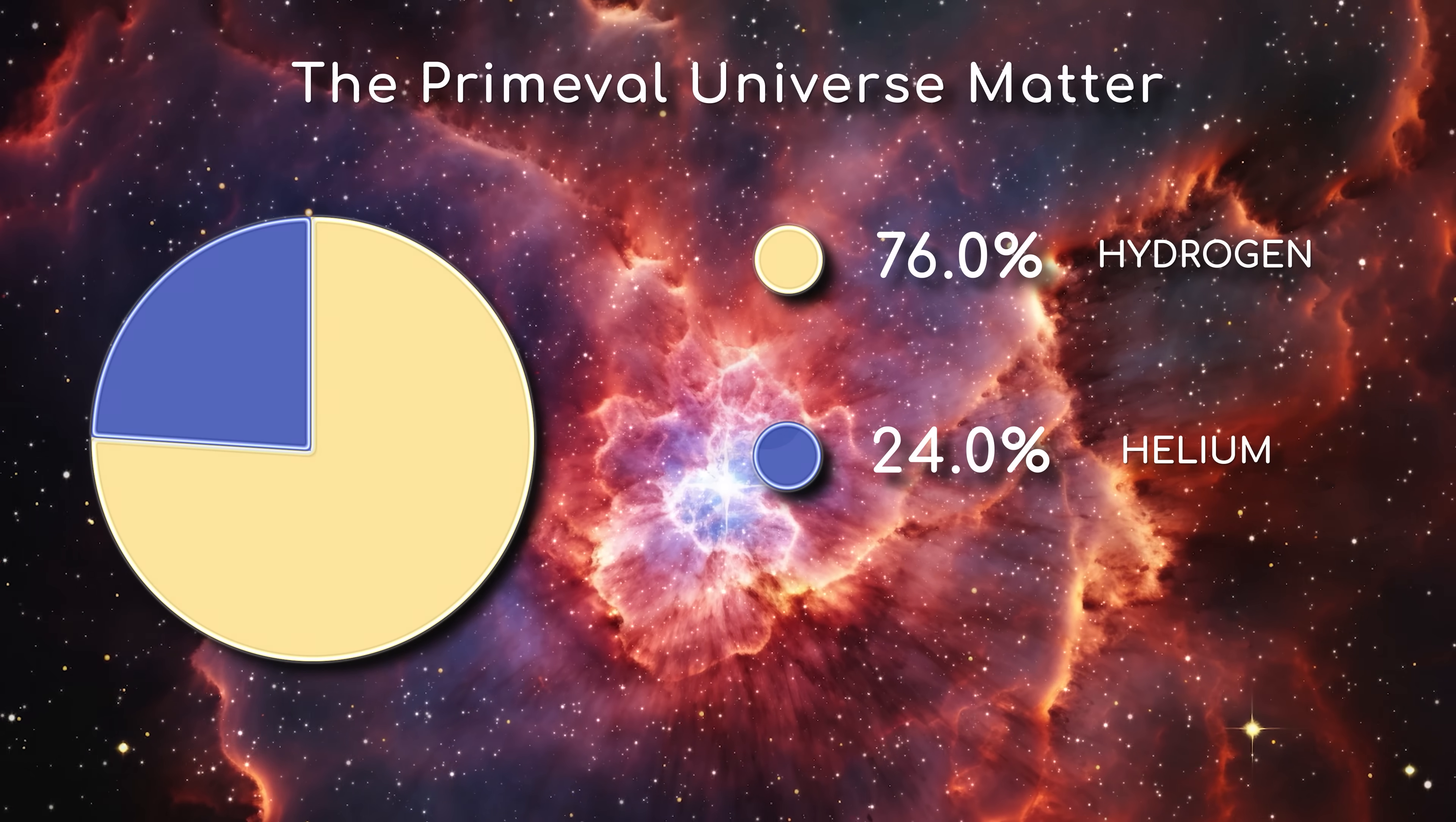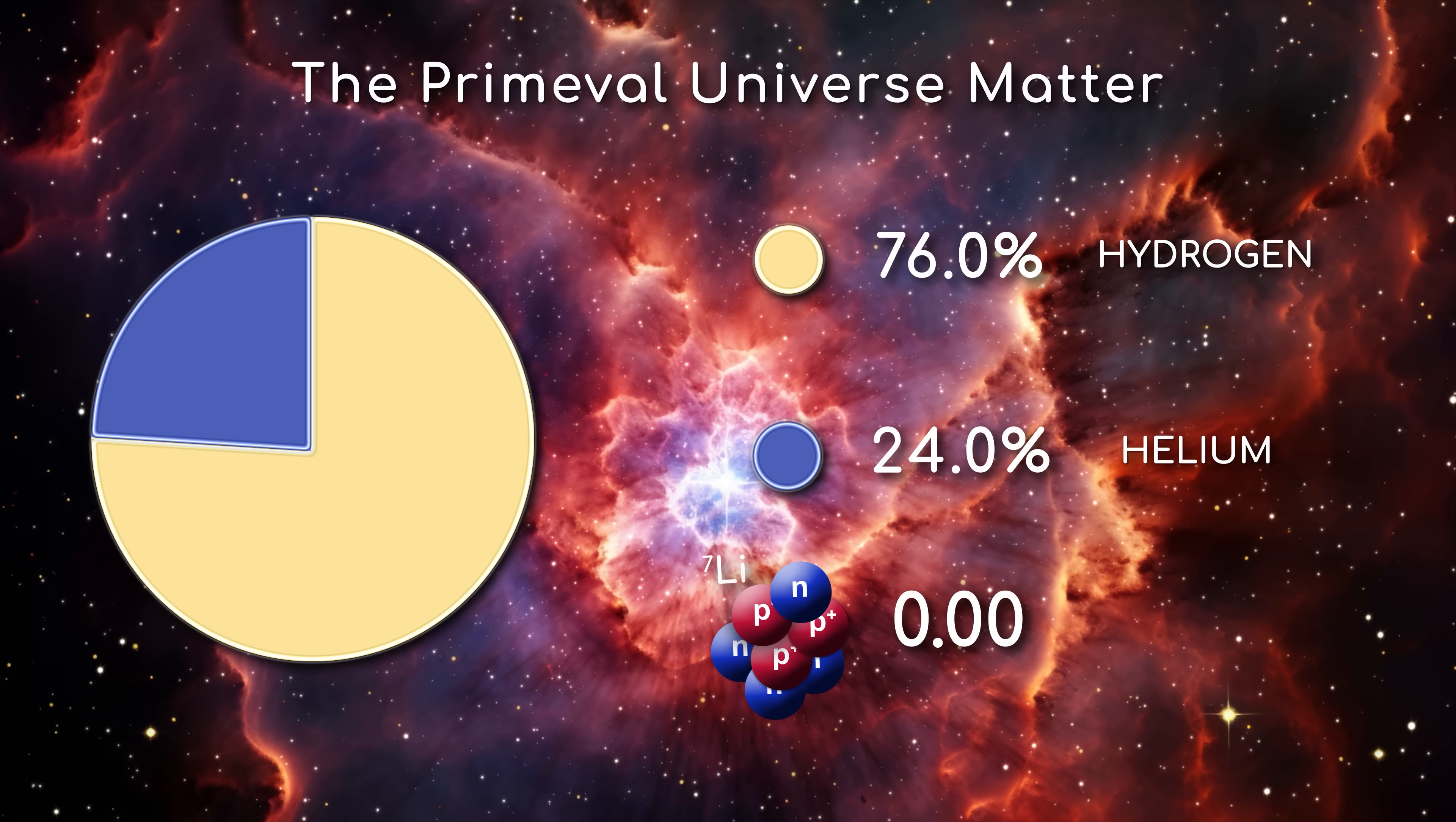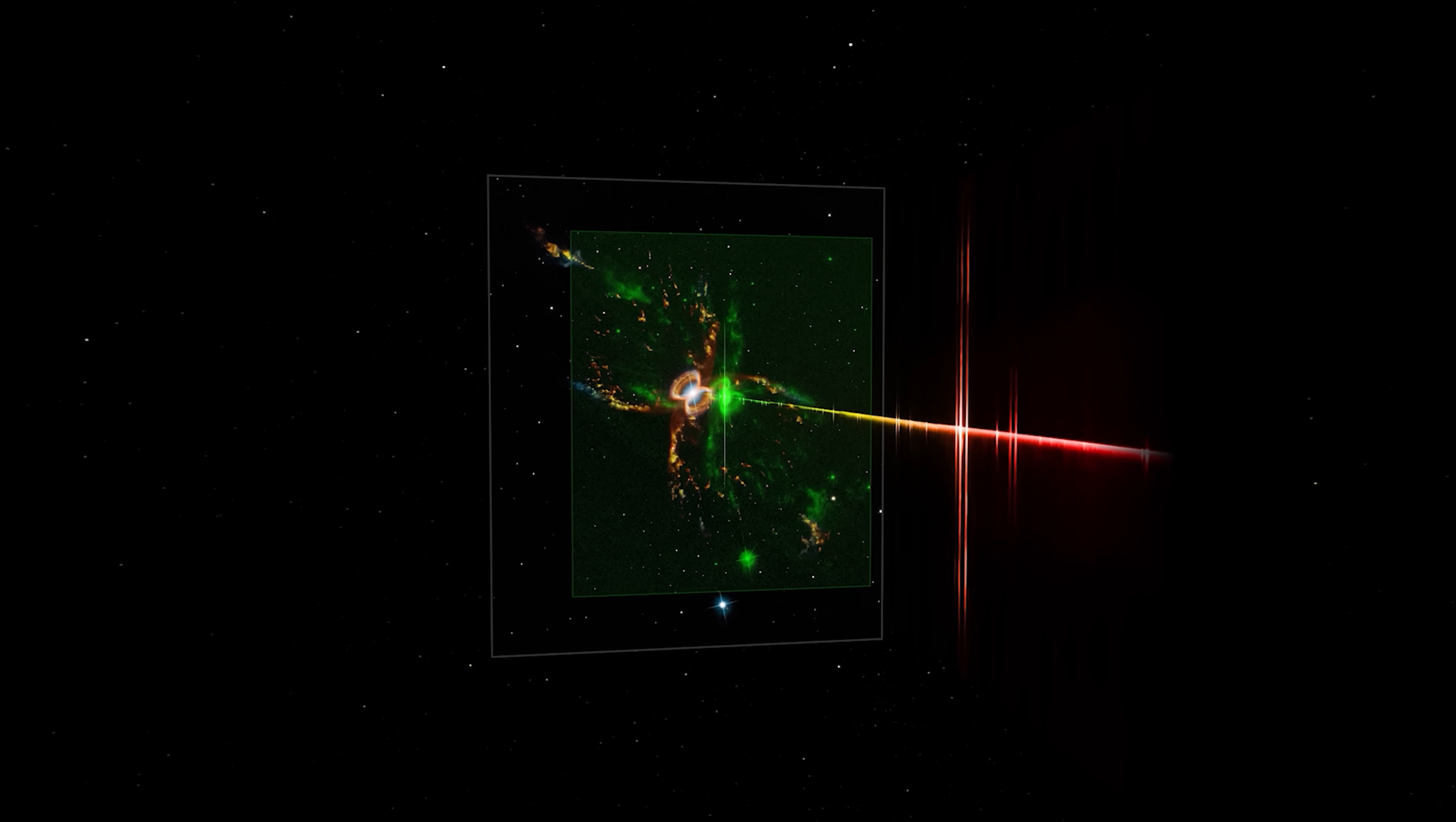But sometimes, very rarely, another proton would merge with the other two, and would form isotopes of lithium, bringing the number of protons in these atoms up to 3. By mass, this made up only 0.000000007% of matter in the early universe. But here is where the mystery comes in.